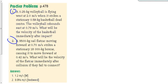Number one says a 0.25 kilogram volleyball is flying west at 2 meters per second when it strikes a stationary 0.58 kilogram basketball dead center. The volleyball rebounds east at 0.79. What's the velocity of the basketball immediately after impact? This term dead center means right smack in the middle. We're probably not even thinking about that, but that's actually kind of important. If it hits on a glancing collision as opposed to dead center, what happens versus when it hits it dead center?